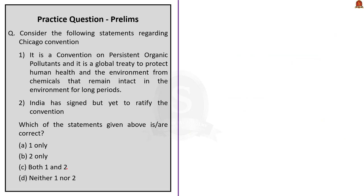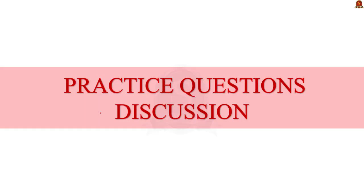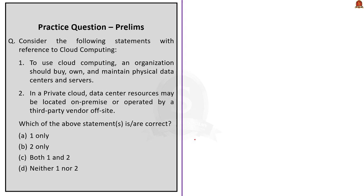With this, we have come to the end of the discussion on Belarus, ICAO and the Chicago Convention. Now let us move on to practice prelims questions. Consider the following statements with reference to cloud computing. First statement: to use cloud computing, an organization should buy, own and maintain physical data centers and servers. Second statement: in a private cloud, data center resources may be located on-premise or operated by a third-party vendor off-site. From our discussion, the first statement is not correct and the second statement is correct. So the answer is B — 2 only.